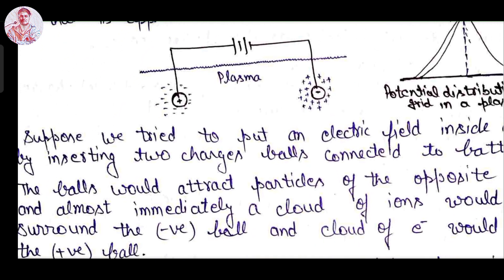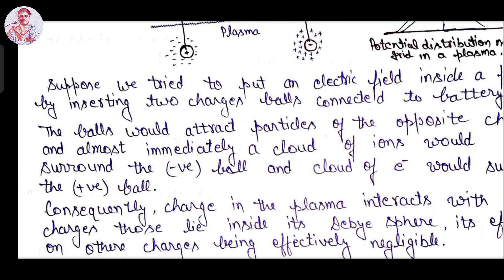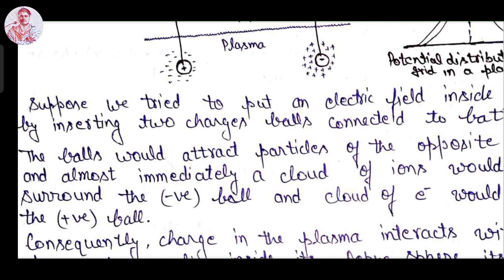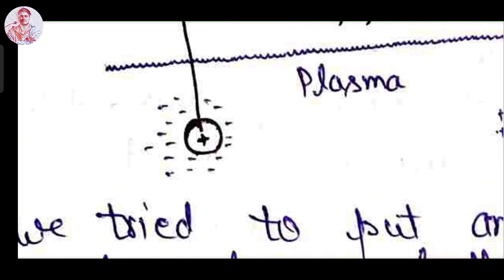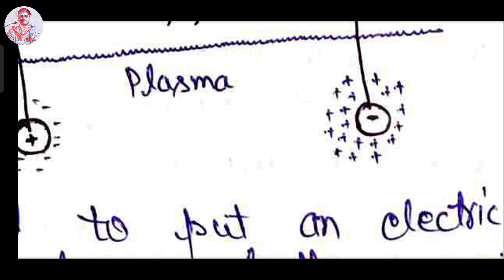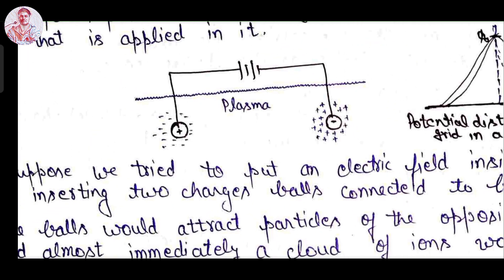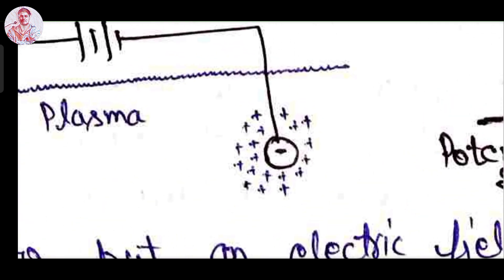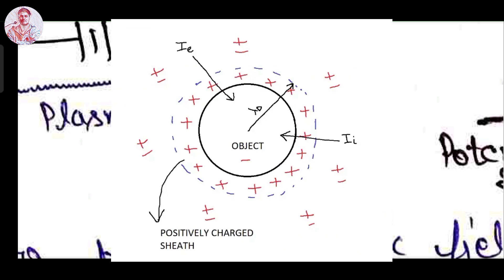The two opposite ball charges — the ball would attract the particles of opposite charges and almost immediately form a cloud of ions surrounding the positive and negative electrodes. The positive electrode attracts negative charges and the negative electrode attracts positive charges to balance the quasi-neutrality condition. This cloud is in the form of a sphere, known as the Debye sphere. The length from the negative ball to the outermost layer of the surrounding charges is known as the Debye length.